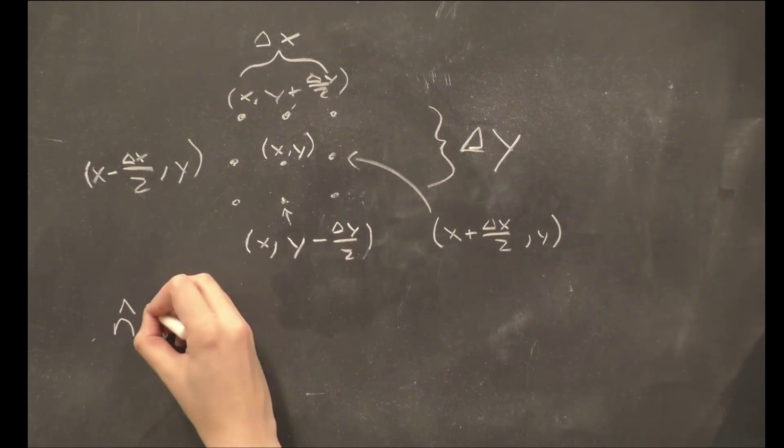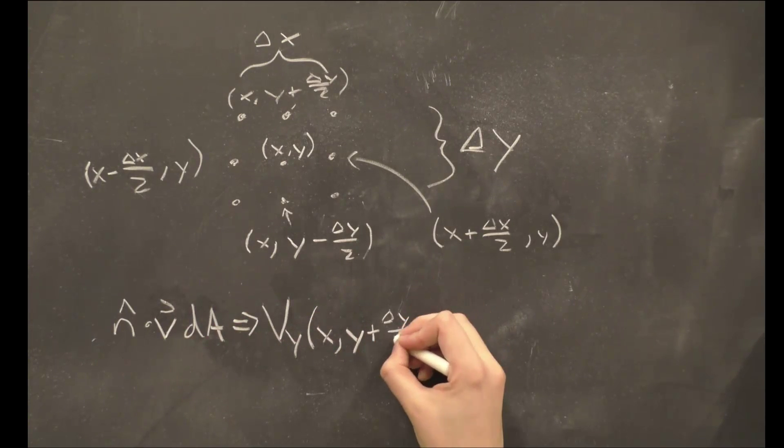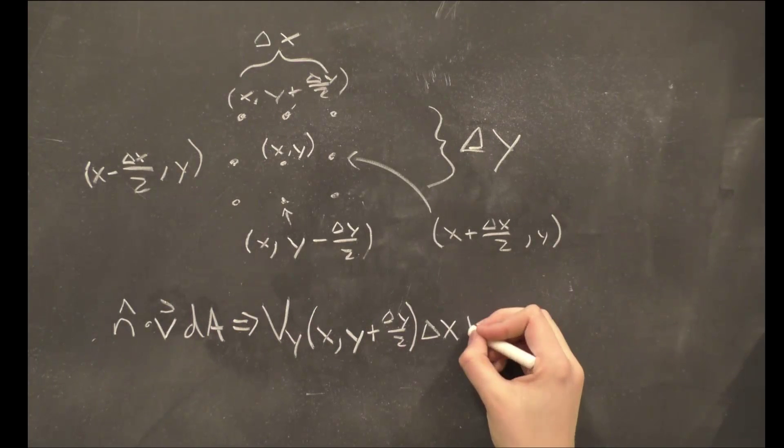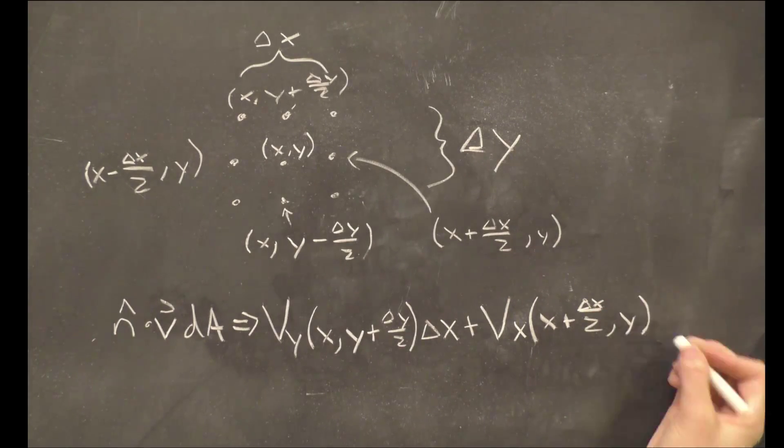In our integrand V dot n-hat dA, V dot n-hat is the perpendicular component of velocity, which is the x velocity for the sides of the square and the y velocity for the top and bottom, and dA is the length of each side.